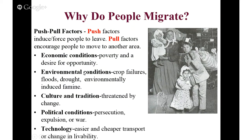Push and pull factors include economic conditions, environmental conditions, and cultural or traditional changes. Political conditions are also major drivers — for example, in Syria, people are leaving to Iran, Turkey, and other areas. That displacement is a push factor. If you keep in mind the motives of people and why they're moving around, you're going to run into push factors and pull factors.